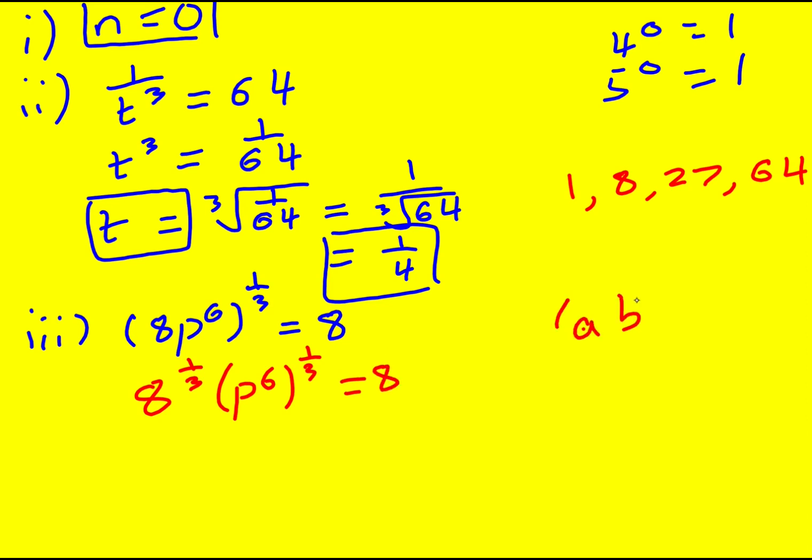What I've used here is this idea that ab to the n is equal to a to the n times b to the n. Because I'm multiplying ab by itself n times, which is the same as multiplying a by itself n times and then b by itself n times.